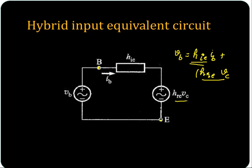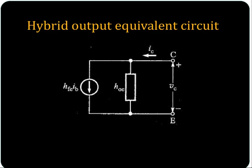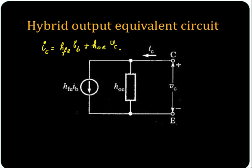What about the output equivalent circuit? For the output equivalent circuit you have IC equal to HFE times IB plus HOE times VC.